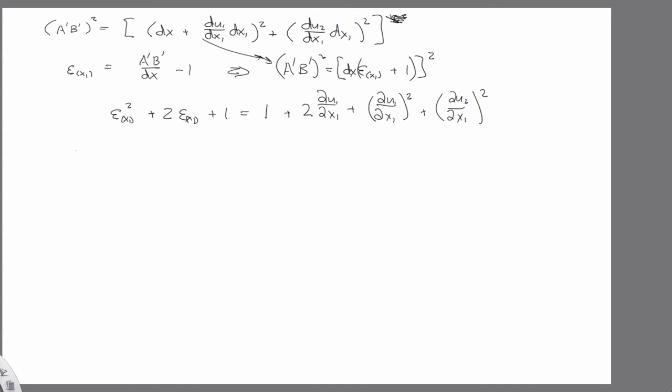Now, again, we're talking about small displacements. So small displacements, these guys are going to be negligible, as is this. And so then the ones cancel, and the twos cancel, and you have strain in the x1 as partial u1 partial x1.